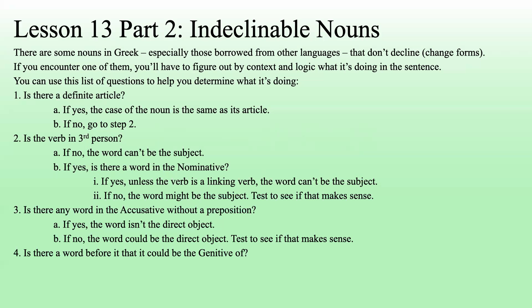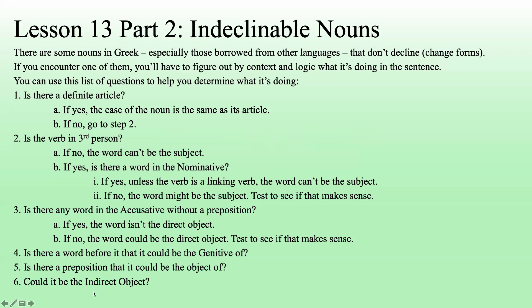If that doesn't work, is there a word before it that it could be the genitive of? Because genitives normally come after the word they're describing. So if there's a word right in front of it that's a noun, try that out. Is there a preposition that it could be the object of, especially if the preposition's right in front of it? Could it be an indirect object? Those are the questions you can ask to try to see what's going on. Those last three you could ask in any order.